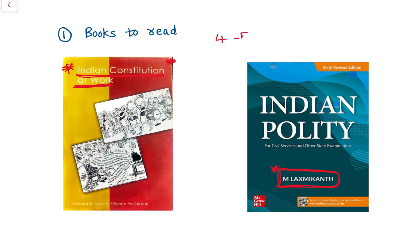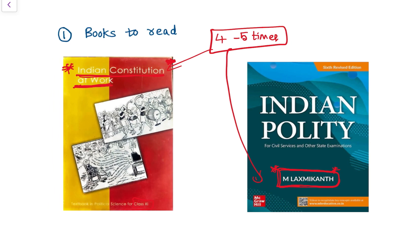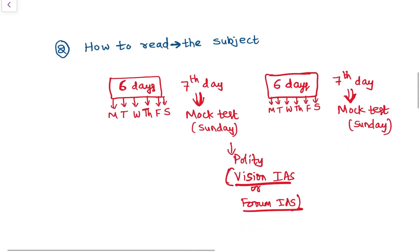You need to read both books at least four to five times before prelims. I see many aspirants reading Lakshmikant but not revising it properly, so try to read Lakshmikant at least four to five times before prelims. Once you read these two books, there is no need to read books like D.D. Basu or coaching institute material on polity. Just stick with Lakshmikant and the NCERT — these two books are sufficient to cover polity.